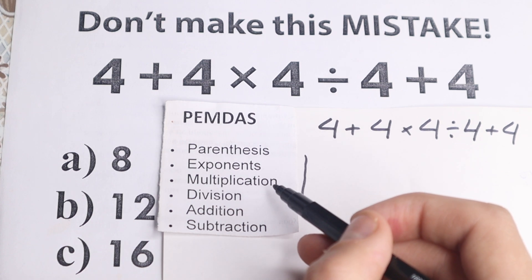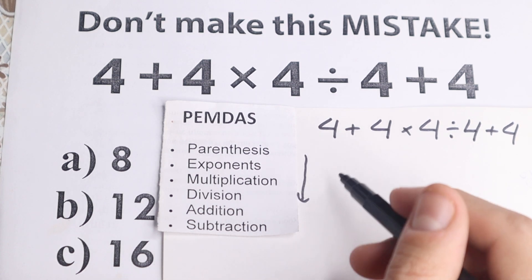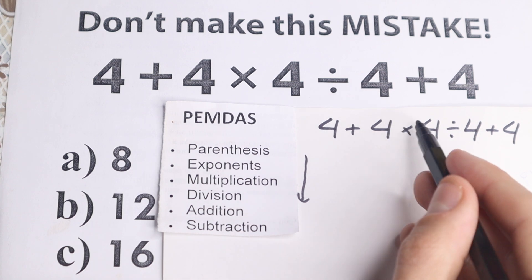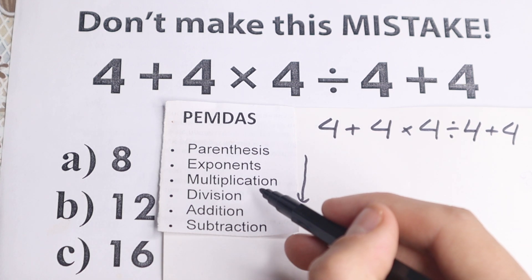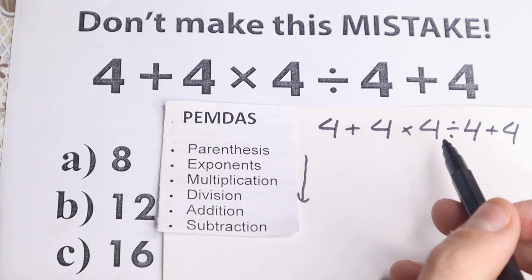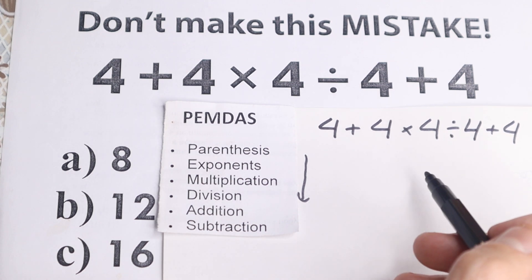The next step, multiplication, but a lot of students do this common mistake, they say, okay, multiplication, now let's multiply this 4 times 4, but multiplication and division works as one group, so we need to scan where do we have multiplication and division.